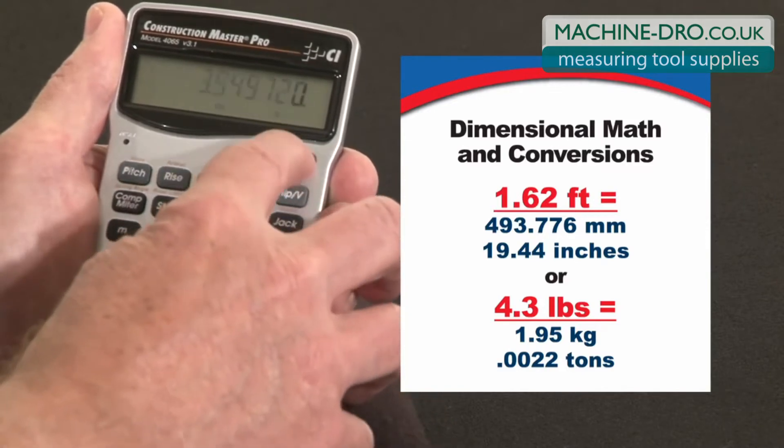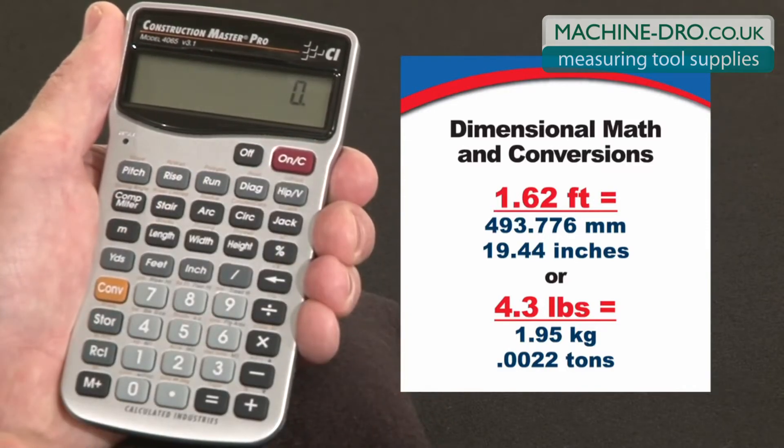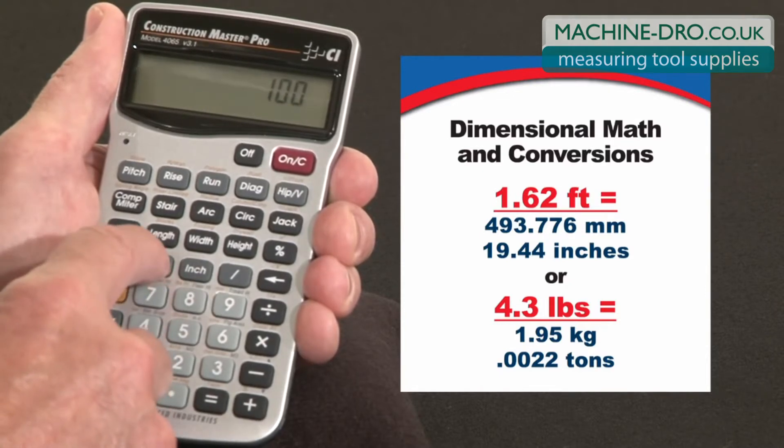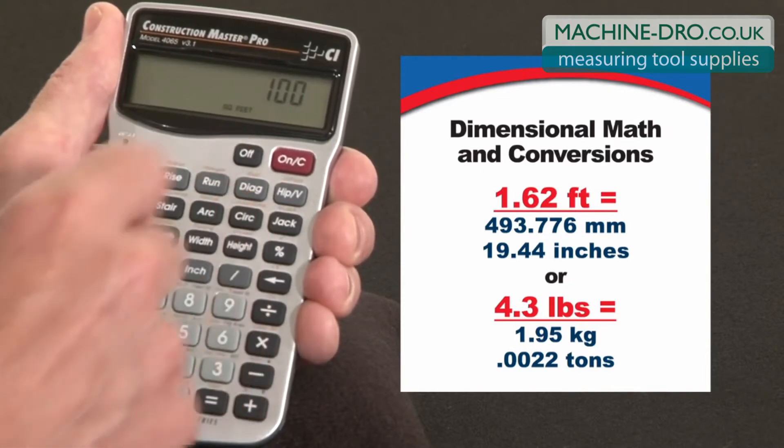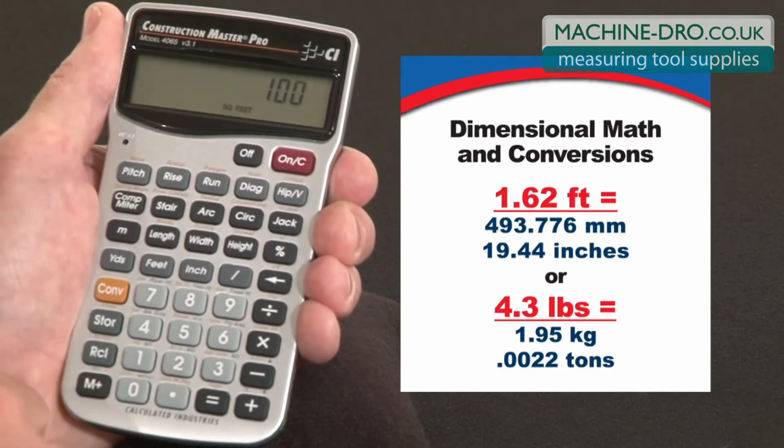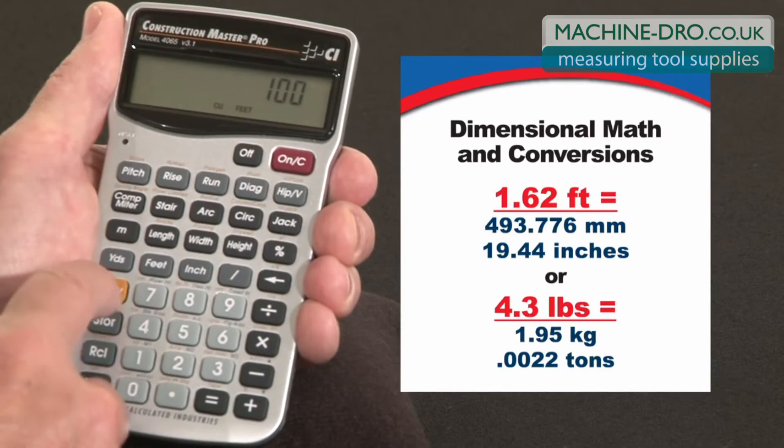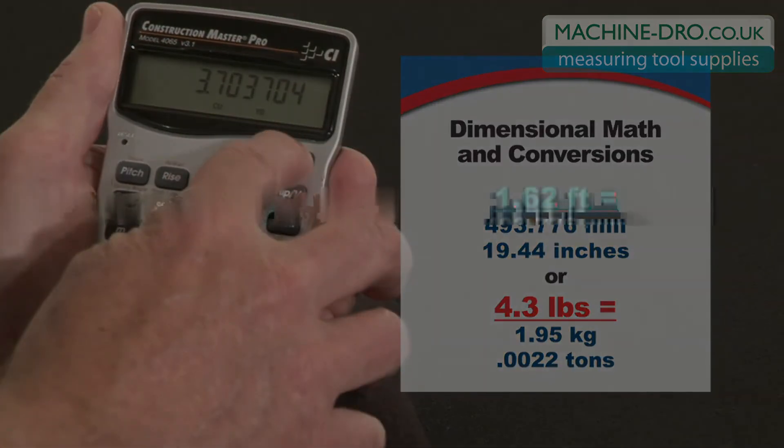Another way to work in square footage and volume is to enter it directly. If you already know the number, you don't have to multiply it. Let's say 100 square feet, you would hit feet, feet. See it now says square feet. You can now start calculating with that. Or if you press it one more time, it goes to cubic feet for cubic volume. And then you can convert that to yards or whatever else you want to do with that.